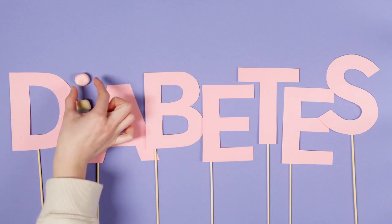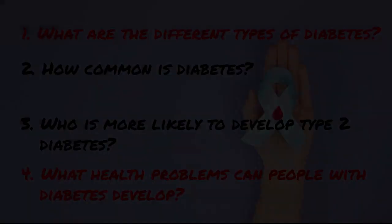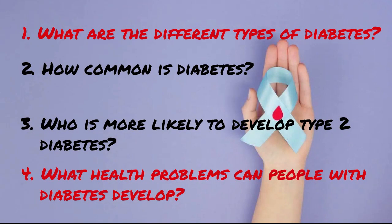Diabetes. This is a short video on understanding diabetes. In this video we are going to discuss: 1. What are the different types of diabetes? 2. How common is diabetes? 3. Who is more likely to develop type 2 diabetes? 4. What health problems can people with diabetes develop?